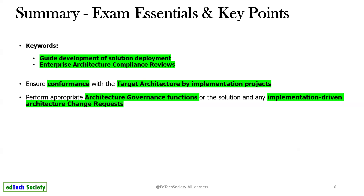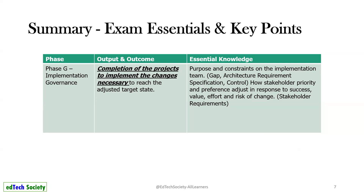The summary from TOGAF shows a block for each phase. A direct question can come in the foundation exam where they show this block with a question mark and ask you to identify the phase. The keyword here is 'adjusted to reach the adjusted target state' — this is the output. Whenever you see completion of projects and reaching the adjusted target state, that means it is talking about Phase G.